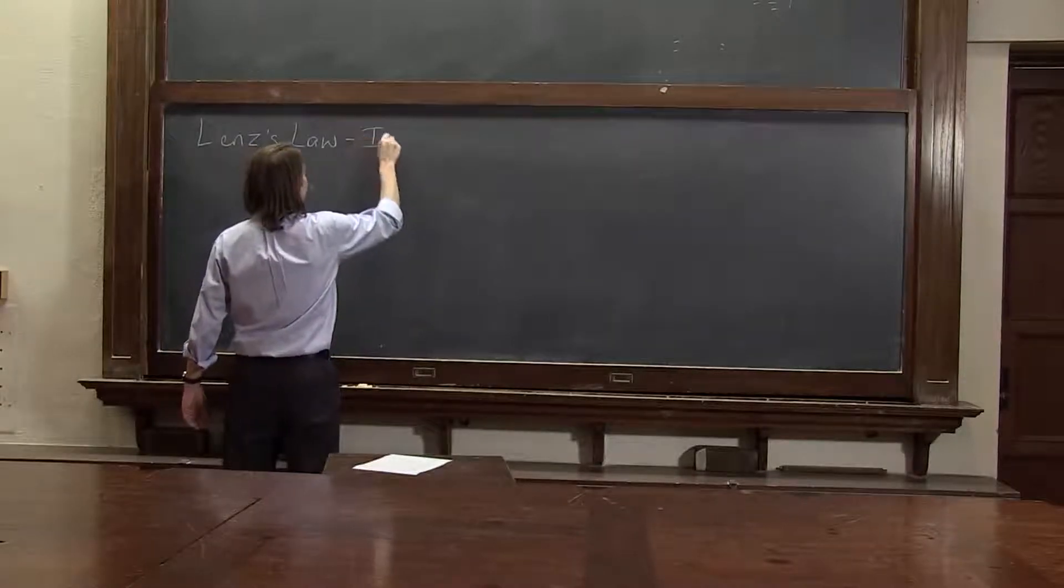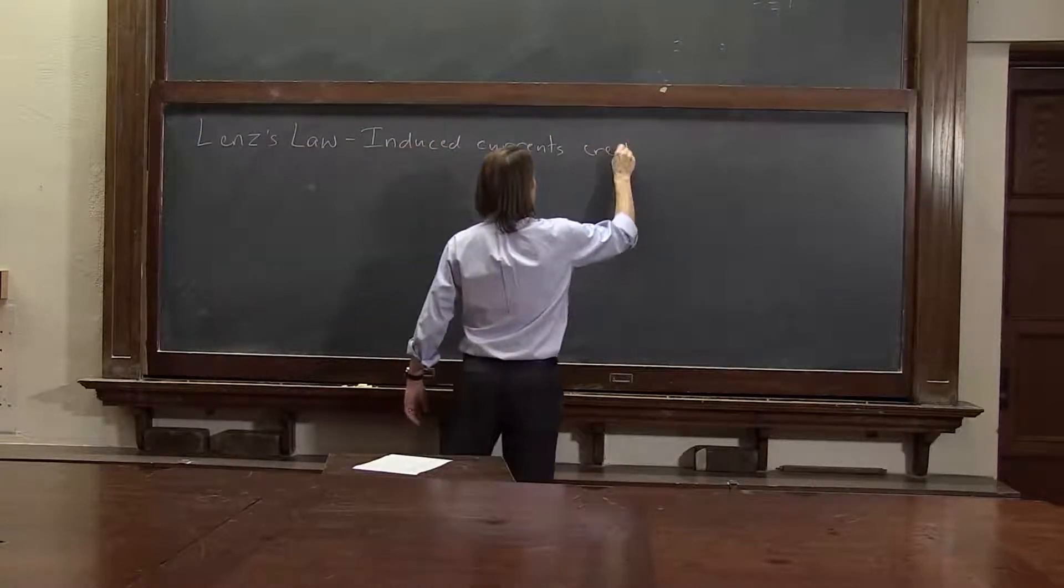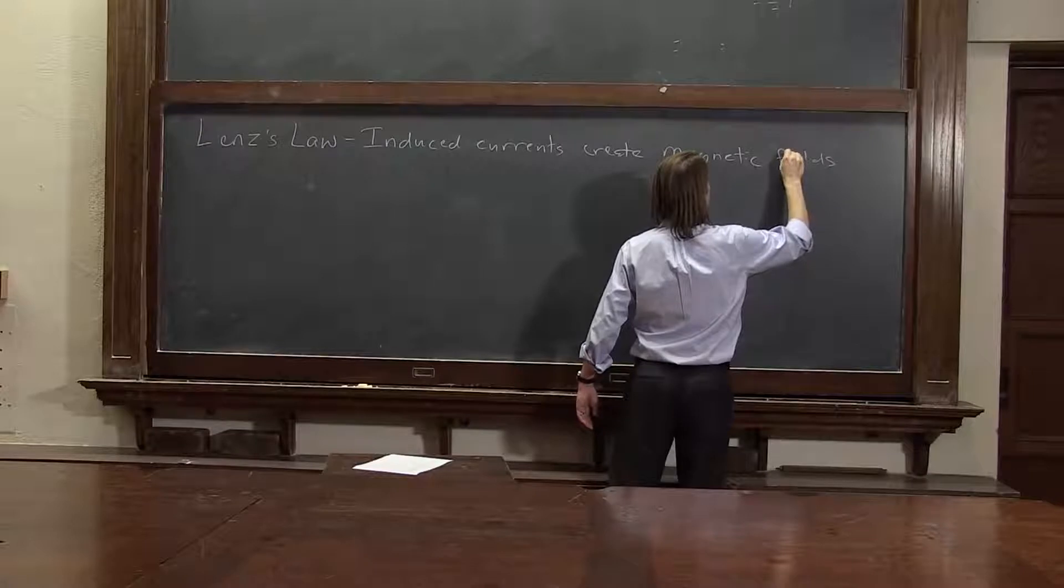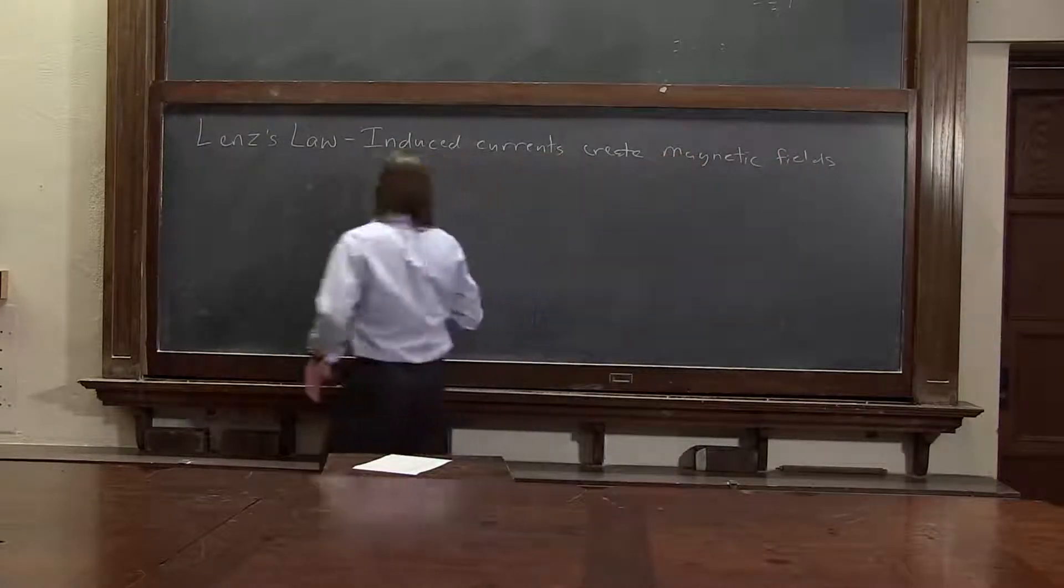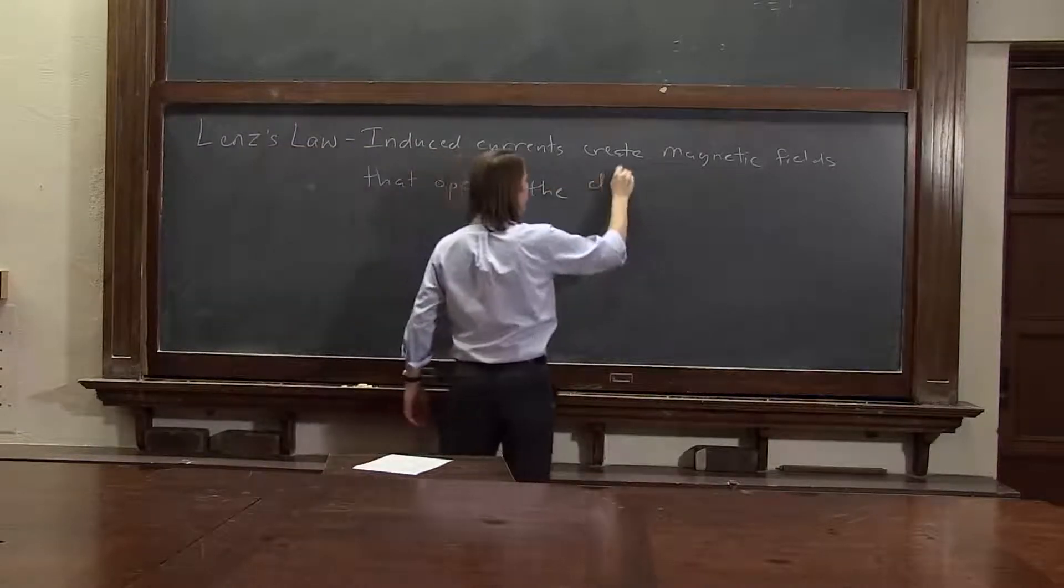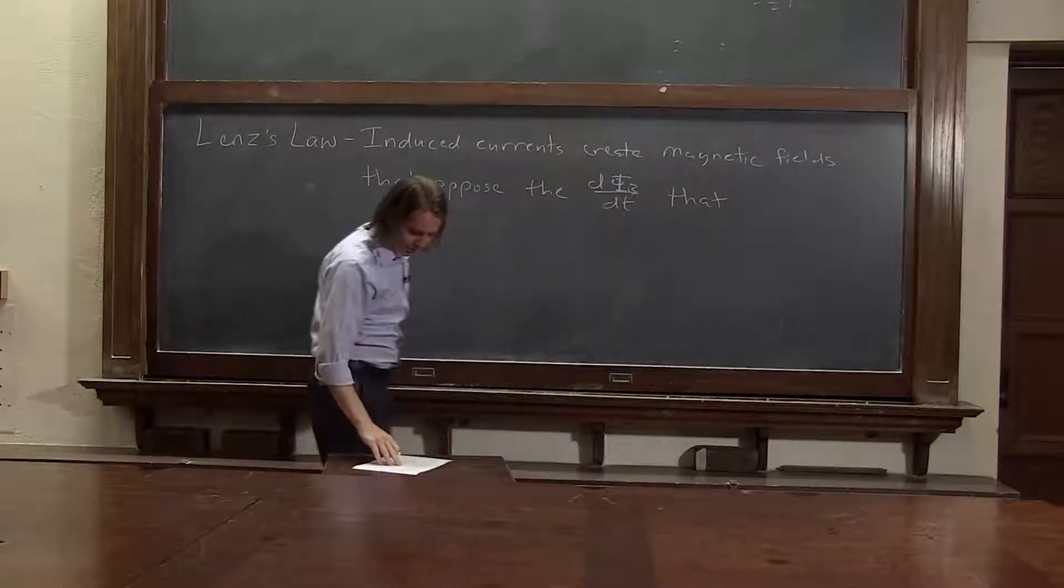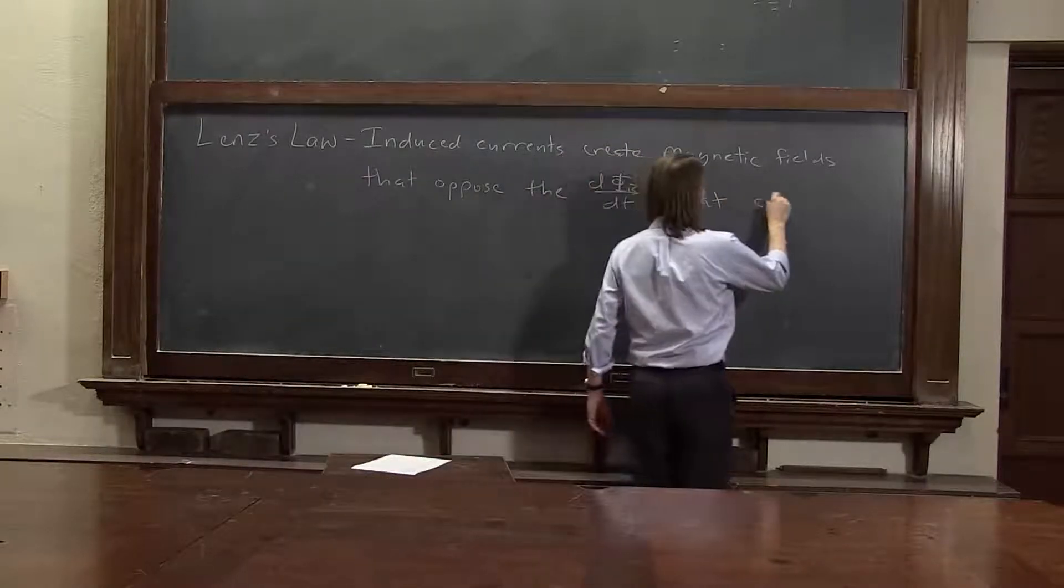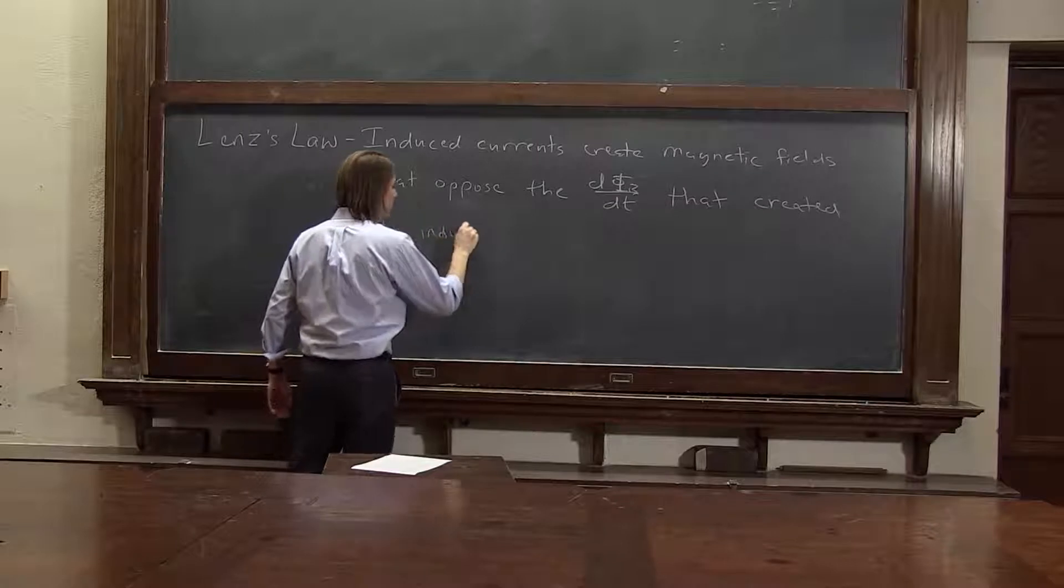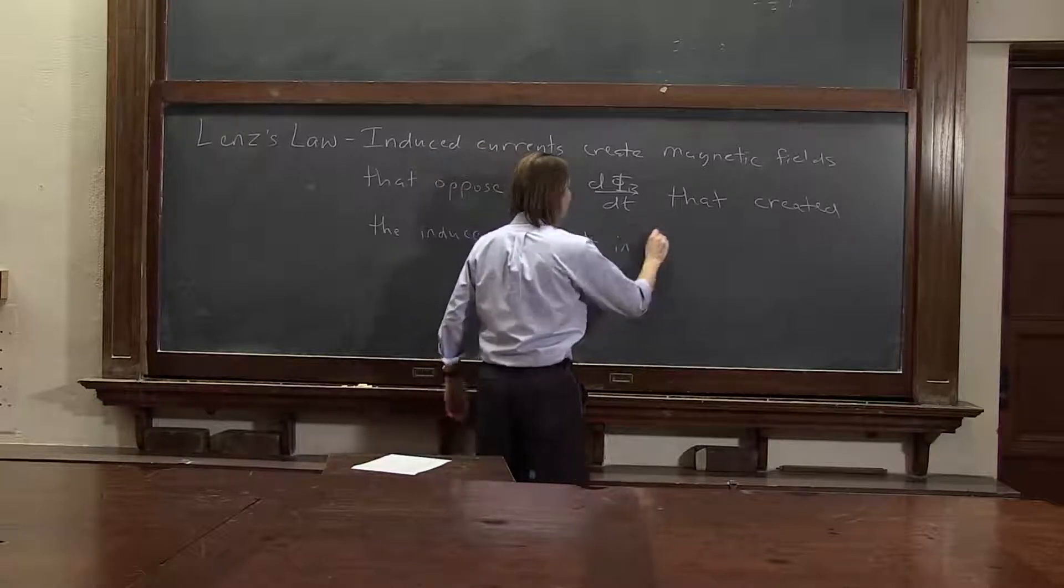So it says, in my phrasing, that induced currents create magnetic fields that oppose the dΦ_B/dt that, and the wording here is critical, created the induced current in the first place.